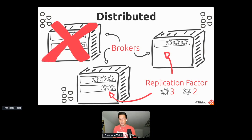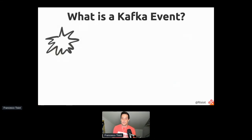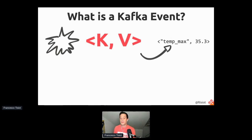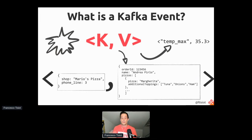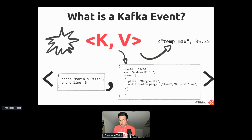We define Kafka as a technology to store events, but we need to understand what is an event for Kafka. For all that matters to Kafka, an event is just a key-value pair. You can use simple events like 'temperature max' as key and '35.3' as the value, or you could include in the key the shop name and phone line used, and in the value all the order details like the order ID, the name of the person, and the list of pizzas within the order.